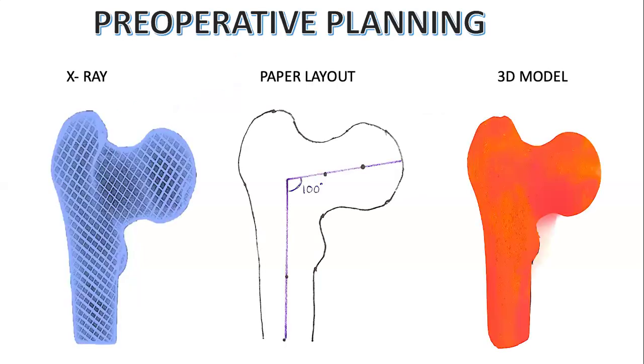So here is a picture which shows you an x-ray on the extreme left, and as was always done, we would make out a tracing of it and calculate our valgus angle of the proximal femur. In this particular case example it is 100 degrees.